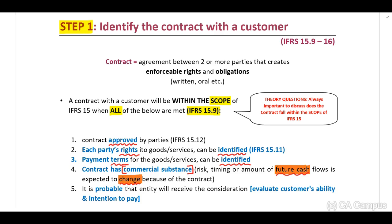And then number five: is it probable that the entity will receive the consideration? Will the customer have the ability and intention to pay our entity?